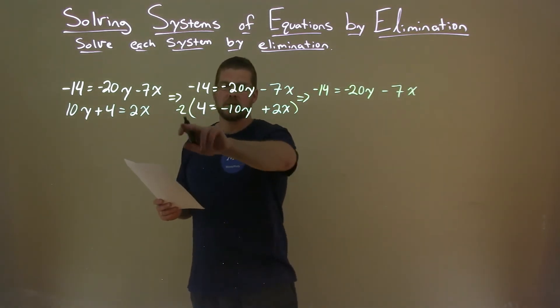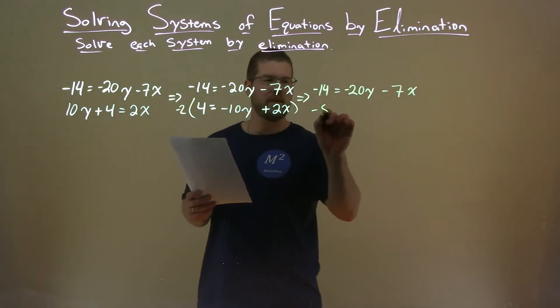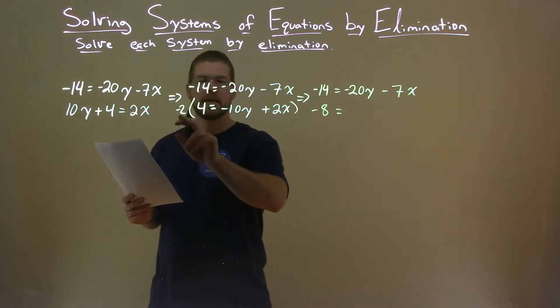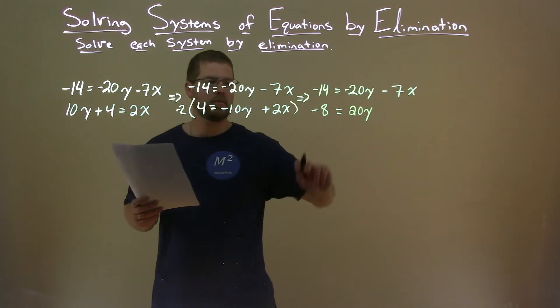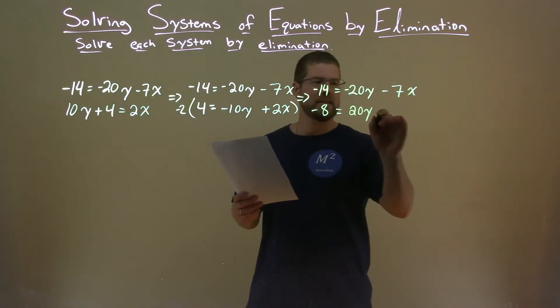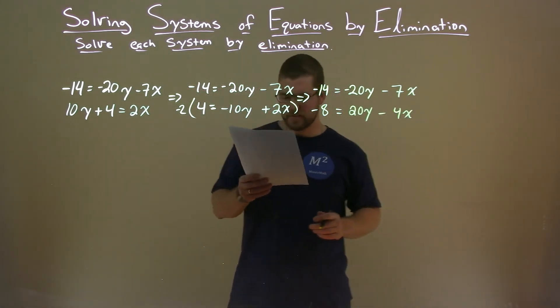The second equation, negative 2 times 4 is a negative 8. Make sure you multiply it to all parts. Negative 2 times a negative 10y is a positive 20y. Negative 2 times 2x is a minus 4x.